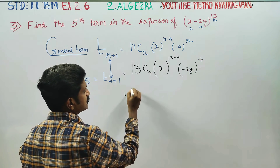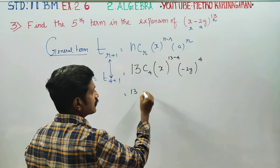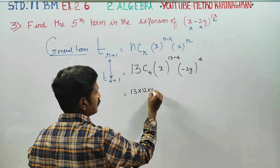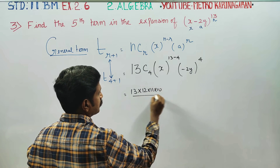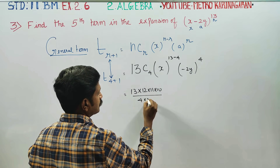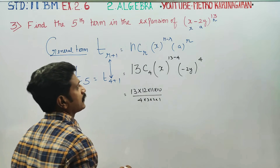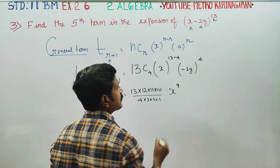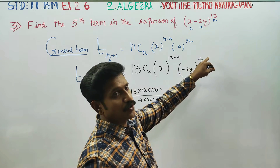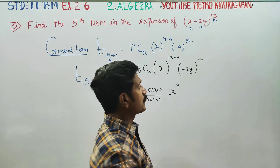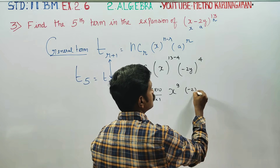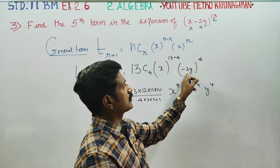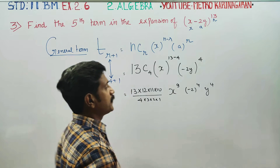13C4 can be written as: 13 descending order four times — 13, 12, 11, 10 — divided by 4 × 3 × 2 × 1. Then X to the power 9 (since 13 minus 4 = 9), multiplied by (minus 2) to the power 4, and Y to the power 4. So we have (minus 2) whole power 4 and Y whole power 4, meaning 2 to the power 4.